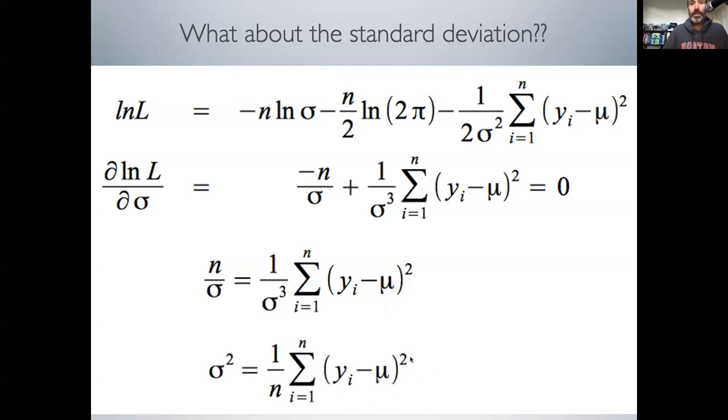So the variance equals the mean squared error. Taking the square root, sigma equals the root mean squared error. That's our best estimate of the standard deviation.